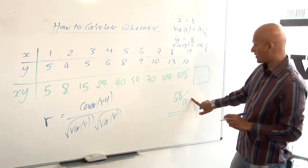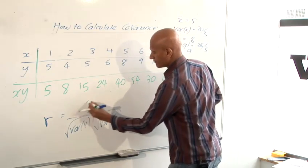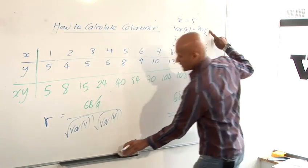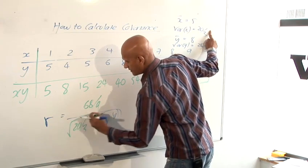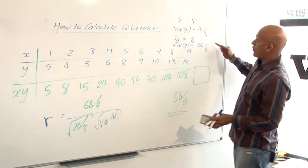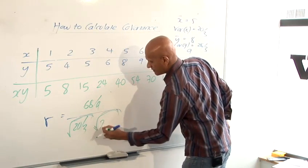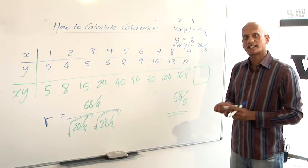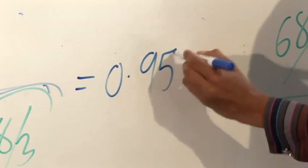We know our covariance XY from before was 68 over 9. Variance of X we worked out before was 20 over 3. Variance of Y we worked out before is 28 over 3. And then just sticking that into the calculator gives you an answer of 0.9578.